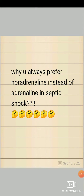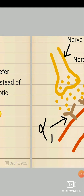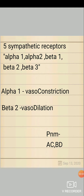Welcome friends. Now we're going to see about why you always prefer noradrenaline instead of adrenaline in septic shock. Normally we have five sympathetic receptors: alpha-1, alpha-2, beta-1, beta-2, and beta-3. Alpha-1 has vasoconstrictor property and beta-2 has vasodilatory property. You can remember it as ACBD — alpha constriction, beta dilatation.